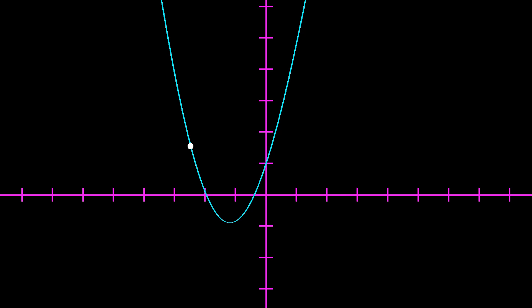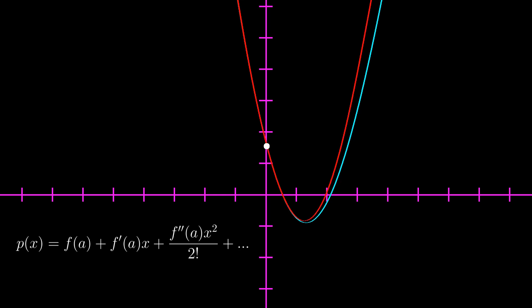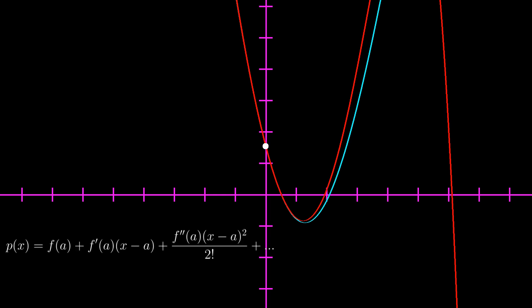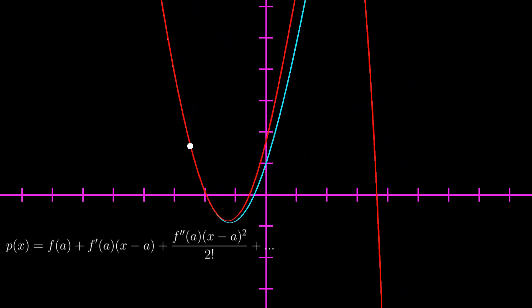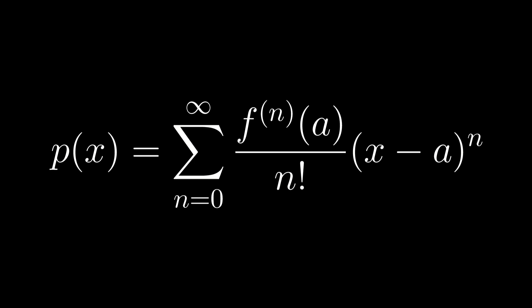To find the Taylor series centered at any point x is equal to a, we can shift the function's graph such that the value x is equal to a is now at the origin point. Then we can take the Taylor series normally, but we plug in the value a instead of 0. After that, we shift both functions back. So in general, this is the formula for the Taylor series of a function centered at x is equal to a.